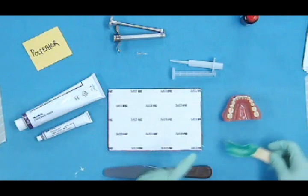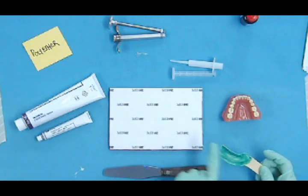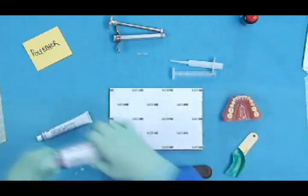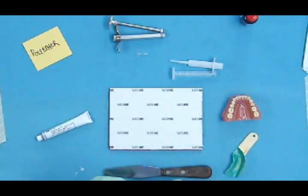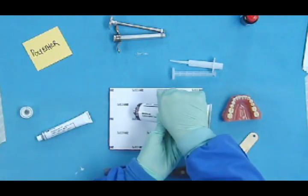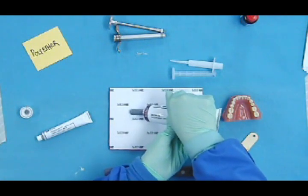So I want enough impression material on my pad to fill this tray and also put some in the syringe. So I will measure out equal lengths of base. This is the base.